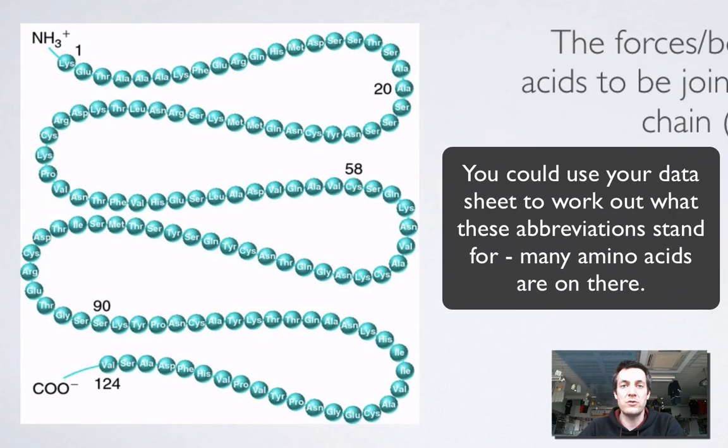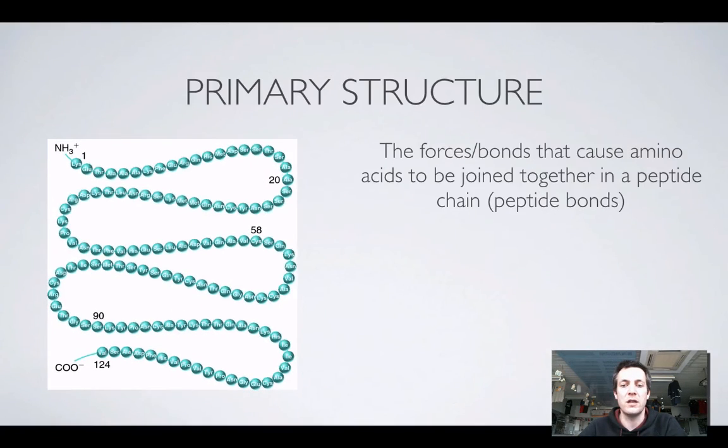So the primary structure is the forces or bonds that cause amino acids to join together in a peptide chain. Now, we should know that they're called amide bonds or peptide bonds by now. But if someone's asking about the primary structure of a protein, they're basically talking about these bonds and the order in which amino acids join together.